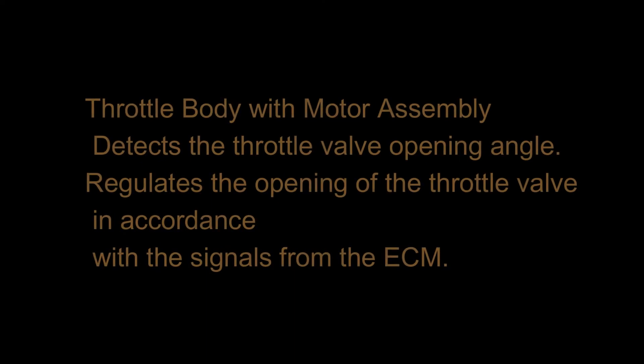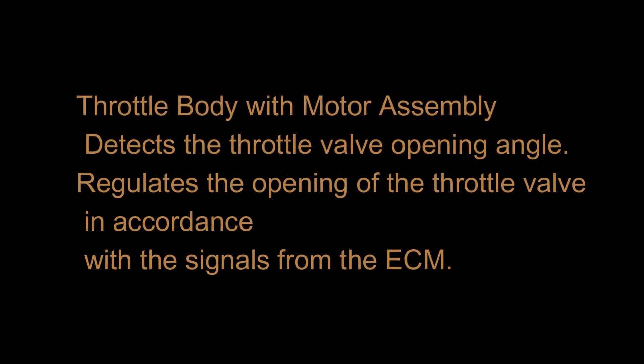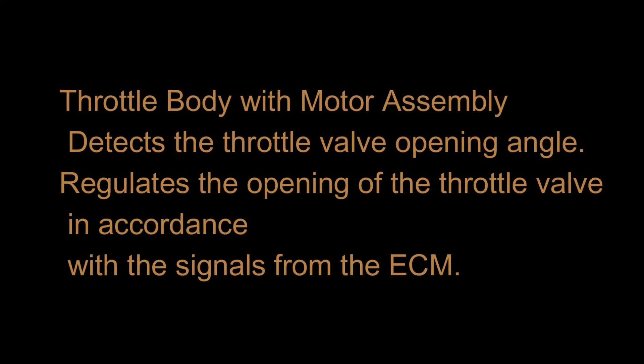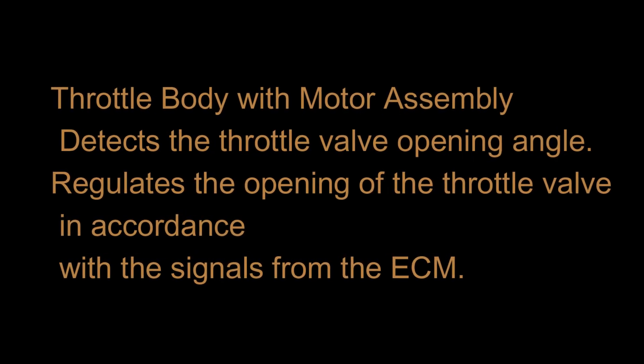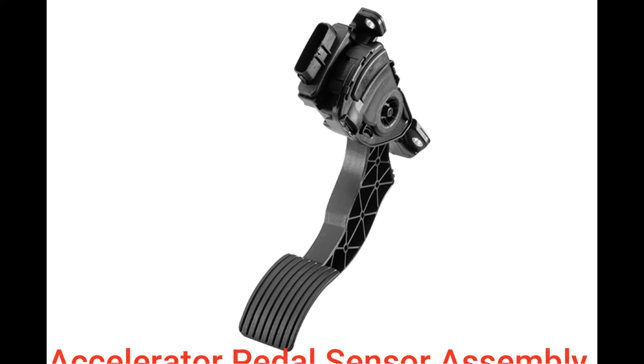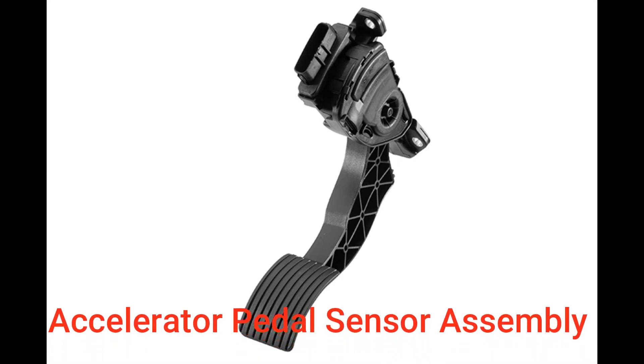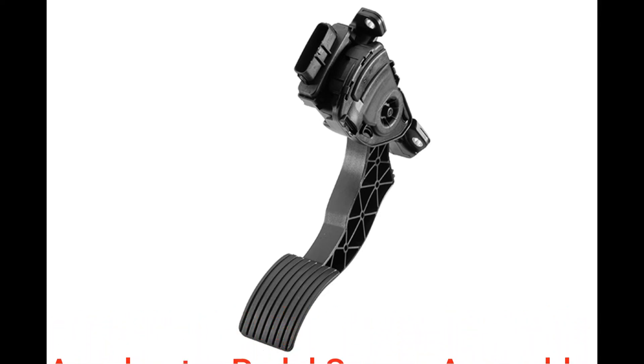Throttle body with motor assembly detects the throttle valve opening angle and regulates the opening of the throttle valve in accordance with the signals from the ECM. Accelerator pedal sensor assembly detects the amount of pedal effort applied to the accelerator pedal.